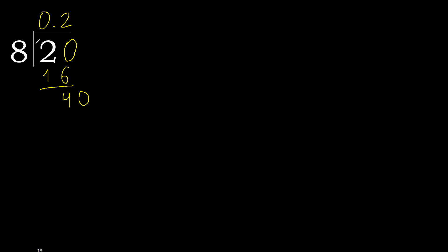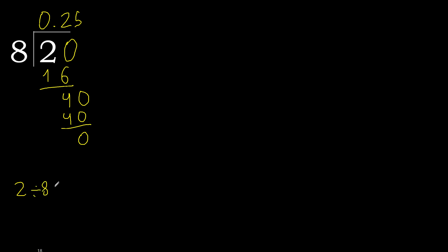40. 8 multiplied by 5 is 40. Subtract 0. Therefore finished — 2 divided by 8 is 0.25.